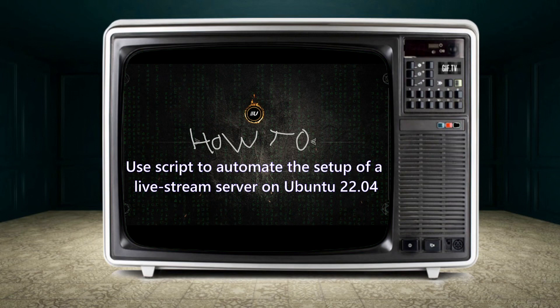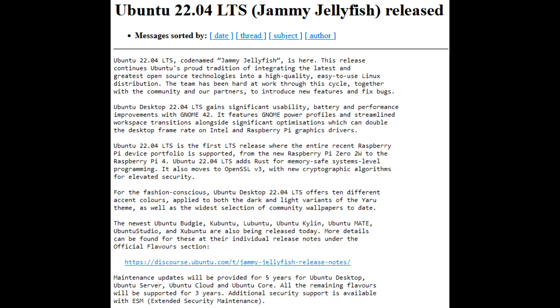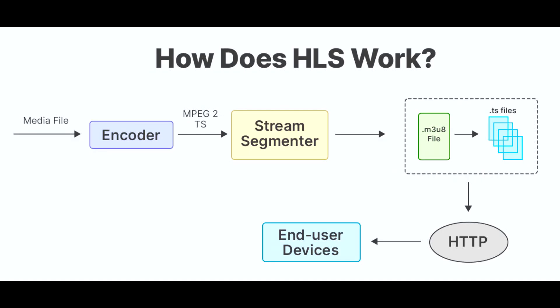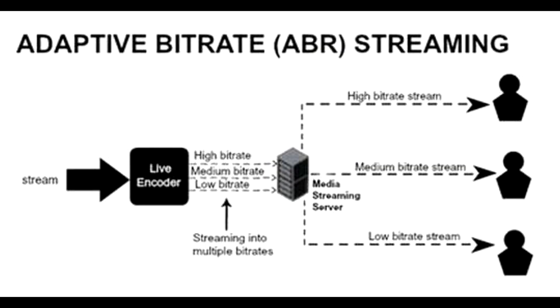The script uses a fresh install of Ubuntu 22.04 and within minutes transforms it into a fully operational live stream server. It runs on nginx plus the RTMP module and uses FFmpeg to handle the transcoding of your stream into an HLS stream with adaptive bitrate.